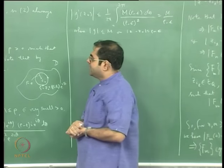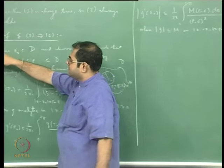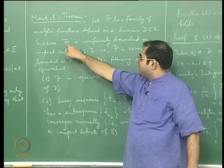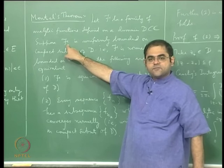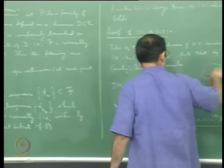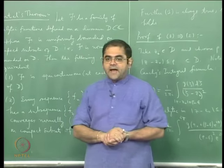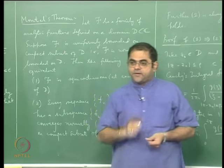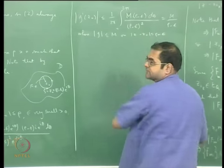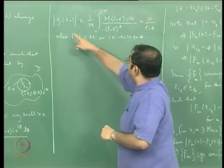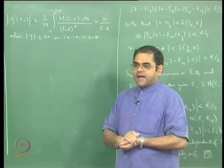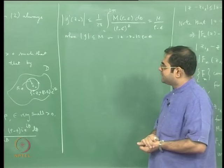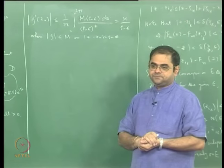This is the bound for an analytic function on this closed disc. Now I am going to apply this to all the functions in my family. All functions in the family are of course analytic — they are analytic in D, therefore analytic on such discs — and the point is they are all uniformly bounded. So I can find a single M which works for all the functions, and therefore I get a uniform bound for all the derivatives.